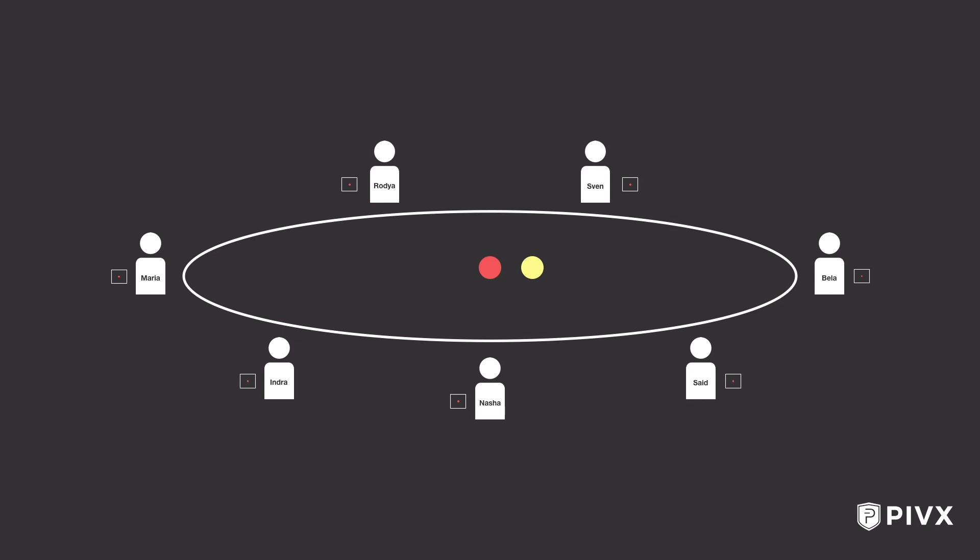Like last time, a player is chosen at random to announce the status of the tarp. This time it's Bella. Bella says: hey, I see that there's a red ball and a yellow ball, and by the way, my prior records indicate that before this, there was just a red ball.